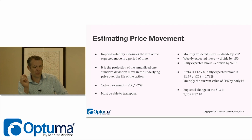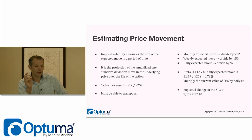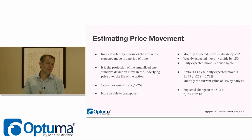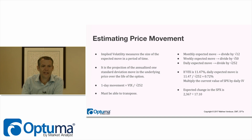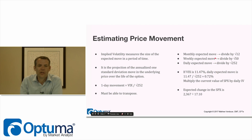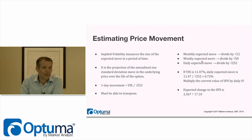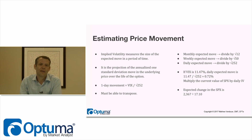The one-day movement equals the VIX divided by the square root of 252. These numbers may seem strange — 252 is a great estimation of trading days in a year, not 365. If you have annualized volatility and want the monthly move, divide by the square root of 12. For the weekly move, divide by the square root of 50 — not 52, because 50 is a better estimation of actual trading weeks. For the daily expected move, divide by the square root of 252. You have to remember these numbers.